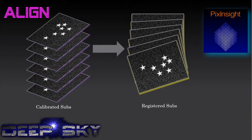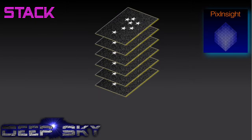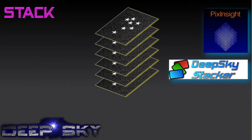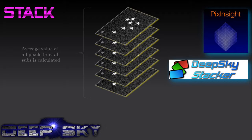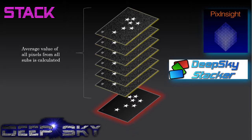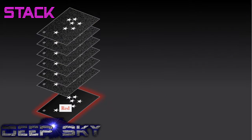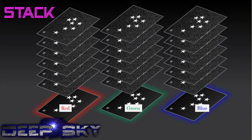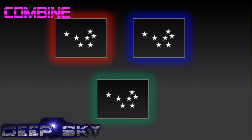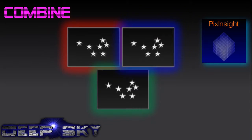We line them up, pick one reference star, and get all the registered subs aligned. Then we take our favorite program — Deep Sky Stacker or PixInsight — and stack the images together. We take the average value of all the pixels to produce a final stacked image reflecting that average value. This will be a clean image. Then we repeat that for all the channels — red, green, and blue — based on the different filters you may have. If it's a mono camera, you combine them with your favorite software. I use PixInsight to produce, voilà, your final image.